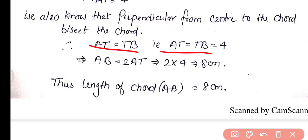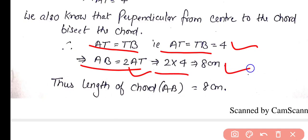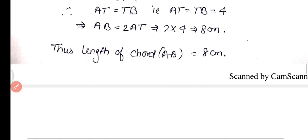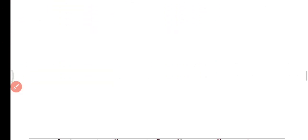Therefore AB = 2 × AT = 2 × 4 = 8 cm. The length of the chord of the larger circle which is tangent to the smaller circle is 8 cm.